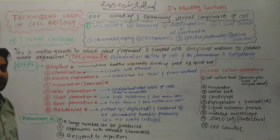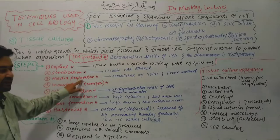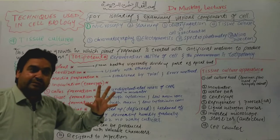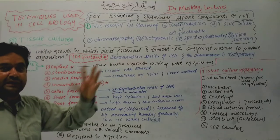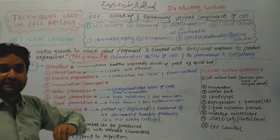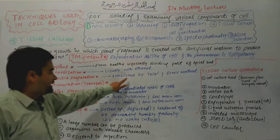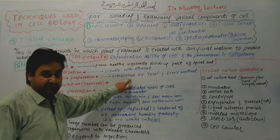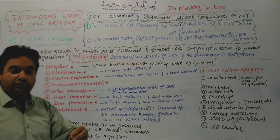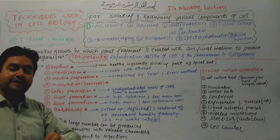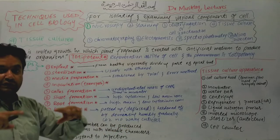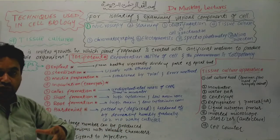The next step is media preparation. The media must be prepared with the right nutrients for the plant to grow in a new way. The composition is established through trial and error. The media includes essential ingredients such as vitamins, minerals, and food sources needed for plant growth.